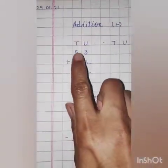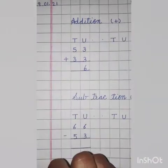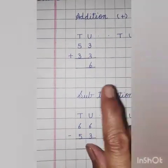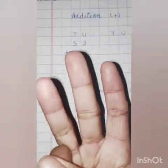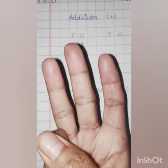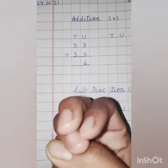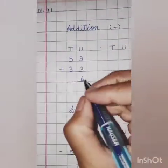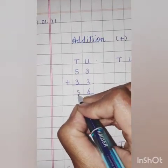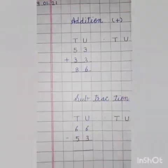Next, the tens side. 5 plus 3 — 5 goes on your head and 3 on fingers. Hit the 5. What comes after 5? 6, 7, 8. The answer is 8. So the full answer is 86.